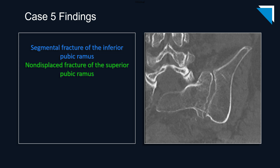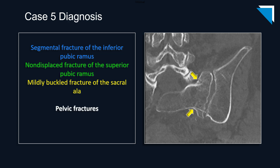And on this coronal image, a buckled fracture of the sacral ala is evident. Isolated pelvic bone fractures are somewhat uncommon, so you should always look for a second and even a third fracture if you see one. It's very common to see superior and inferior pubic rami fractures, but in many cases there are also fractures of the sacral alae, so it's important to include that region in your search pattern.